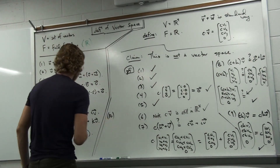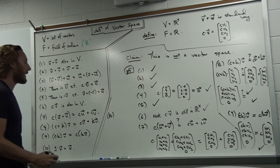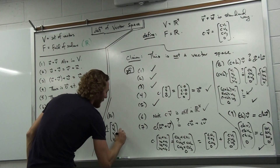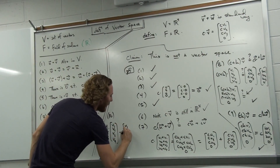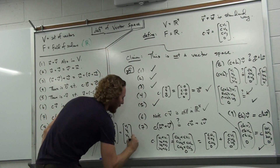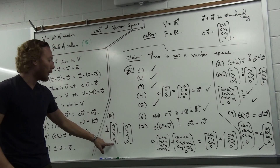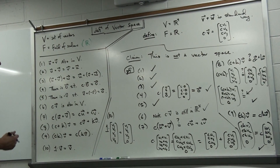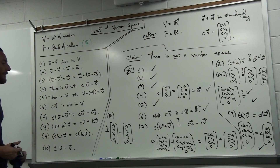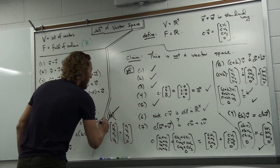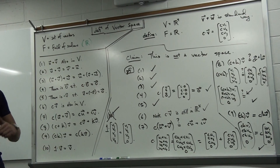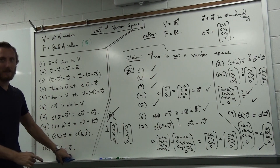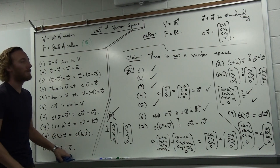But let's check property ten: one times a vector should return that vector. One times (v1, v2, v3, v4) gives v1, v2, v3, zero. Herein lies the problem — v4 could have been anything, but multiplying by one doesn't give that same value back in the fourth component. So one times v does not equal v. Since we failed stipulation ten, this is not a vector space — to be a vector space you must satisfy all ten stipulations.